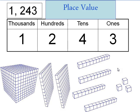So again, when we're looking at place value, we start on the right-hand side — opposite of if we're reading a sentence. If we're reading a sentence, we start from the left-hand side. But when we're looking at numbers and trying to figure out place value, we start on the right-hand side first: ones, tens, hundreds, thousands. Then we read it going back: one thousand, two hundred, forty-three.